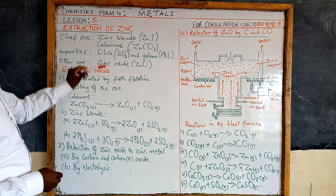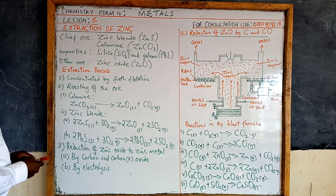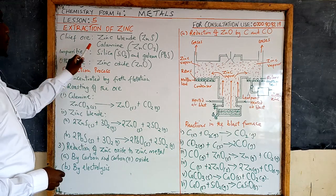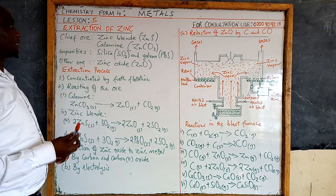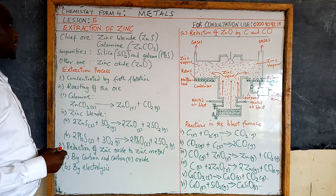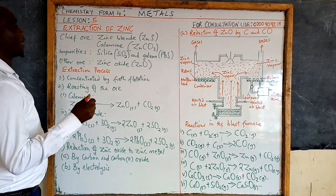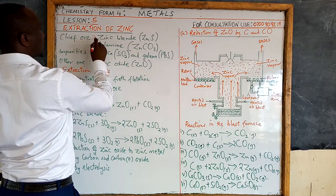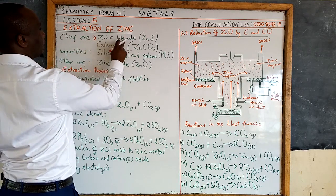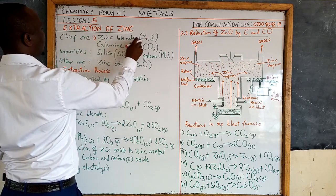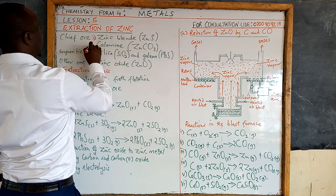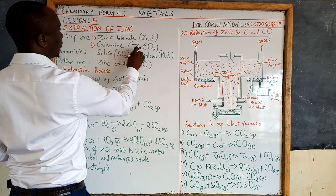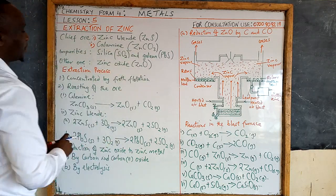So first we start with the chief ore. The chief ore from which zinc is extracted — we have two. One is zinc blende, which is a sulphide. And two, calamine, which is a carbonate.